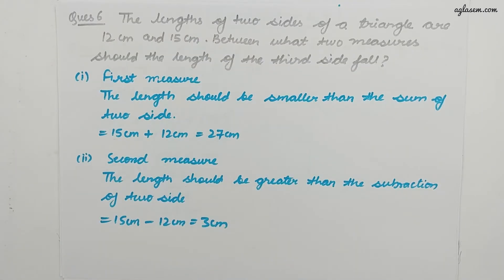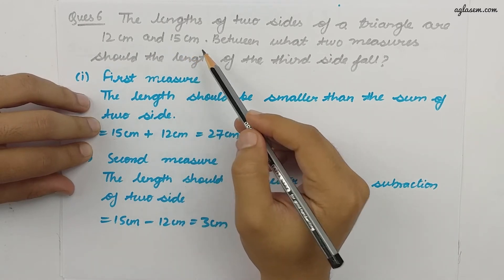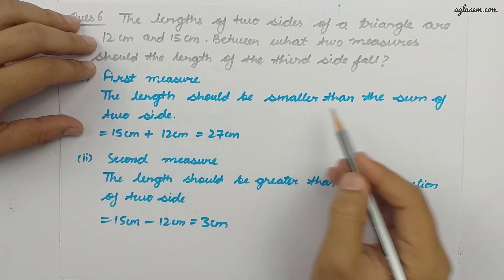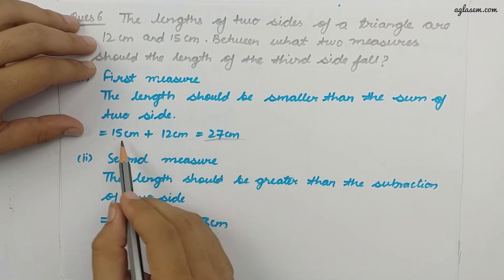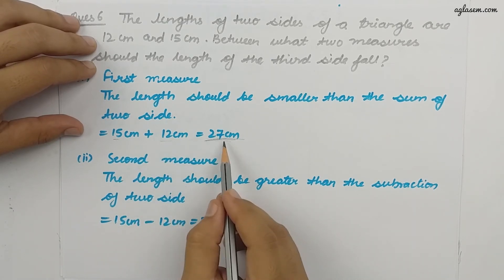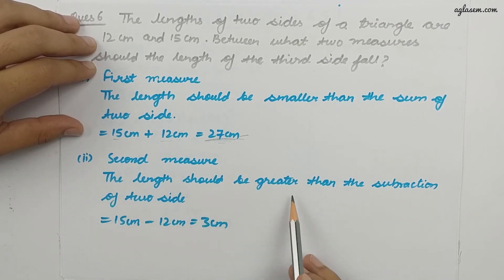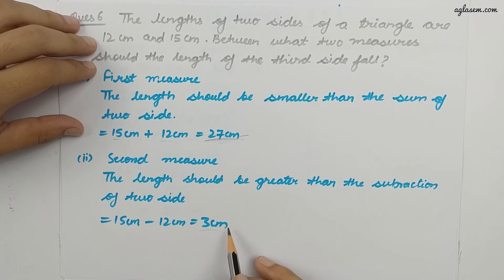The last question, question six: the lengths of two sides of a triangle are 12 cm and 15 cm. Between what two measures should the length of the third side fall? First, the third side should be smaller than the sum of the other two sides: 15 plus 12 equals 27, so the third side must be less than 27. Second, the third side should be greater than the difference of the other two sides: 15 minus 12 equals 3, so the third side must be greater than 3. The third side must fall between 3 and 27.